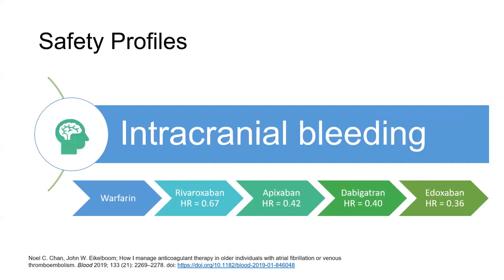Next, we'll turn our attention to intracranial bleeding, which I think is the most feared side effect of prescribing a blood thinner to an elderly patient who may have a risk of falling and hitting their head. The interesting thing here is that all of the DOACs perform better than warfarin — all of them have hazard ratios of less than one, meaning that rates of intracranial bleeding, whether you choose rivaroxaban, apixaban, or edoxaban, occur less commonly than with patients anticoagulated with warfarin.